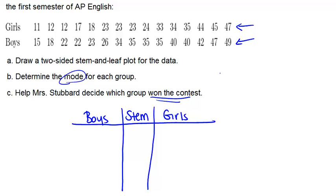The data ranges from the 10s up to the 40s, so the stems will be 1, 2, 3, and 4. Now I can add in the data for each group. For the girls, in the tens we had 11, 12, 12, 17, and 18, which took care of that group.